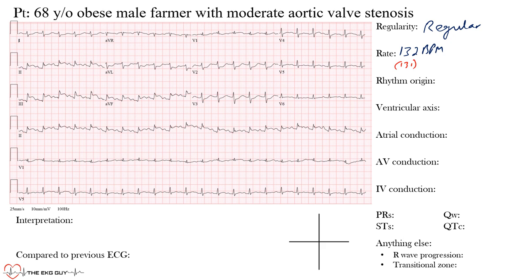The actual rate given by the machine was 131 beats per minute, so we were very close with that first method. If you want one way to find the rate, I'd recommend that initial approach — counting complexes and multiplying by 6.